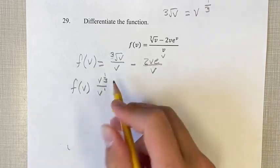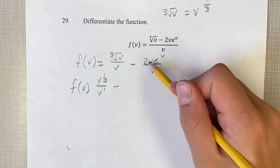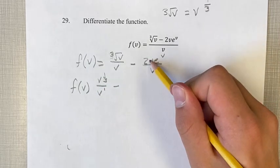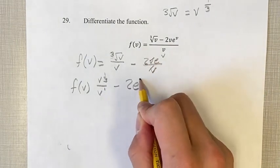v on its own is just v to the 1 minus, and here we have a v in the numerator and a v in the denominator. These cancel and we're left with minus 2 e to the v.